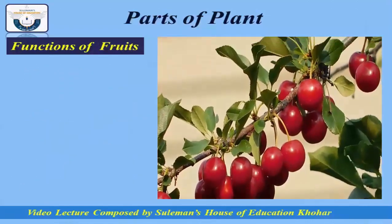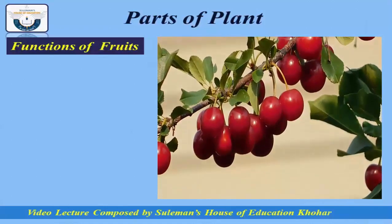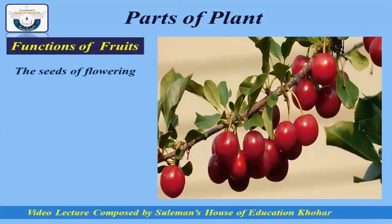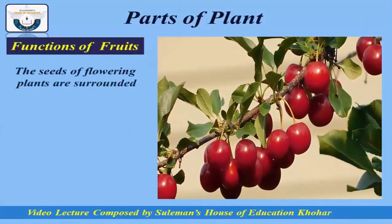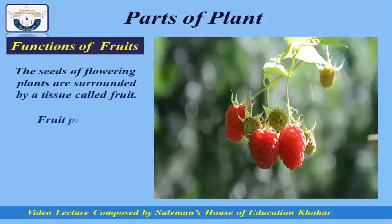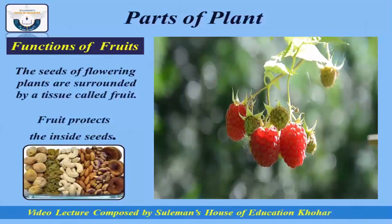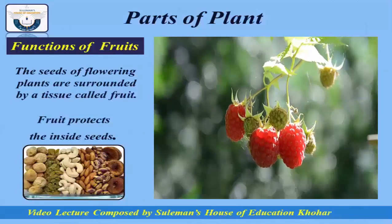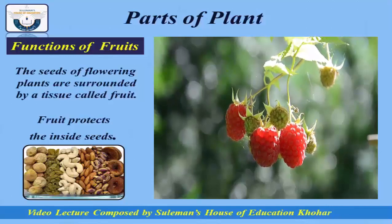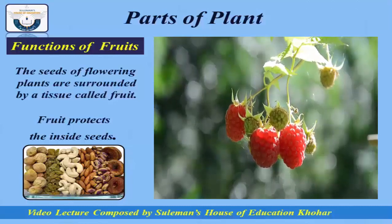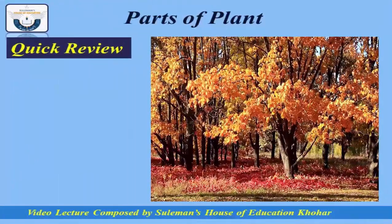Now we will see what fruits are and their functions. The seeds of a flowering plant are surrounded by a tissue called fruit. Fruit may be fleshy or dry in nature. Fruits are sweet, sour, and edible in raw state, such as apples, bananas, lemons, oranges, and strawberries. The fruit's primary function is to protect the seeds inside.